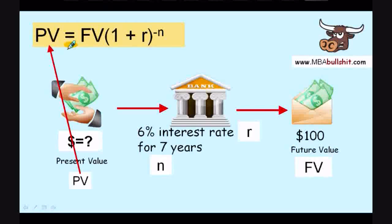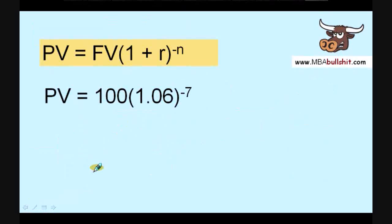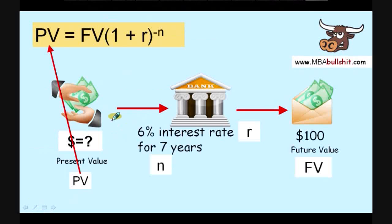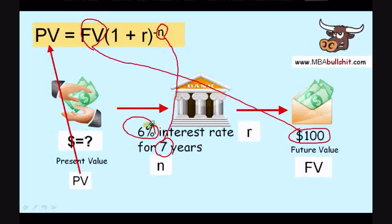Now let's see how we can plug these figures into the formula. We already know the future value is $100, which goes into FV. We know that N is 7, which goes into N. And we know that the interest rate R is 6%, which goes into R.